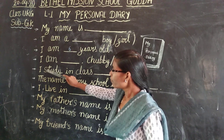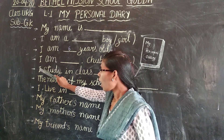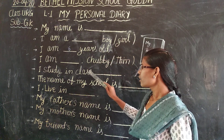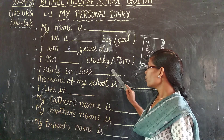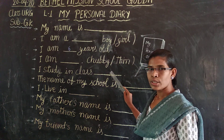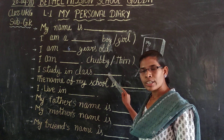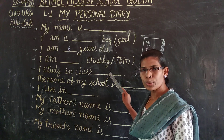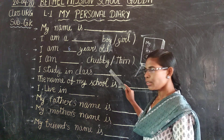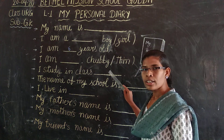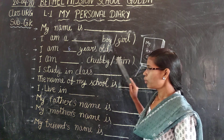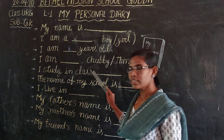Now the fifth line: I study in class UKG. Which class are you studying? UKG. So in the classroom you have to write: I study in class UKG. Okay, children.